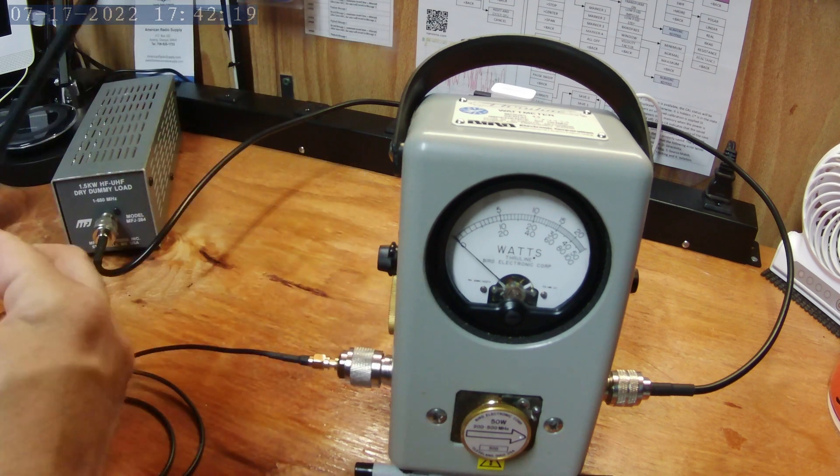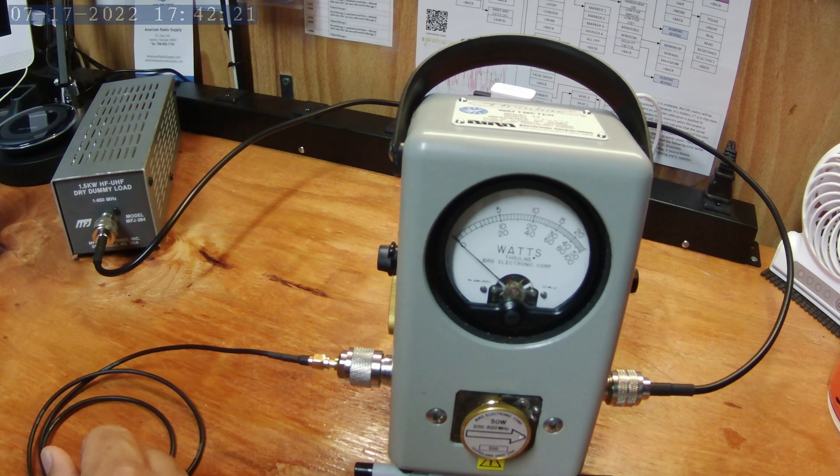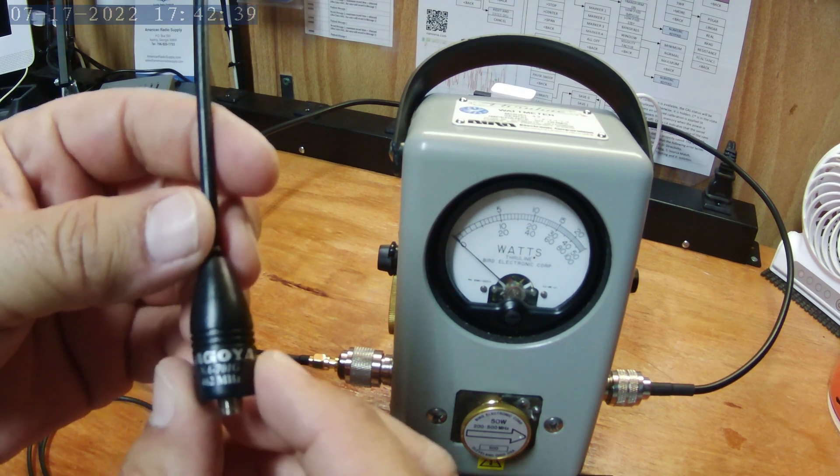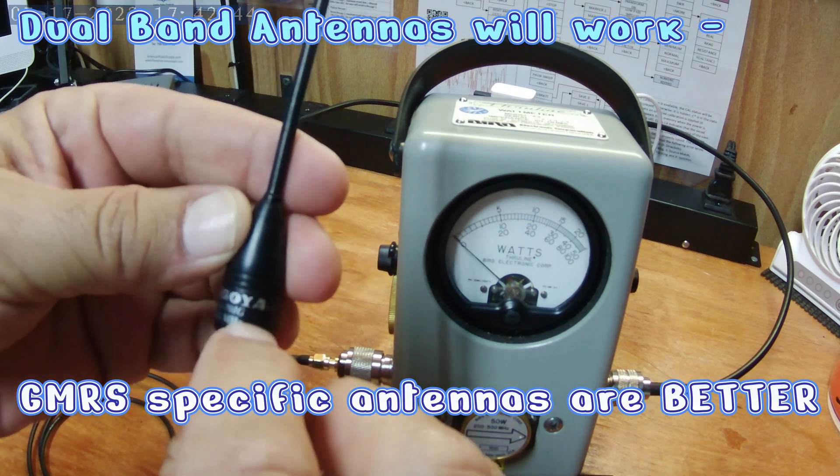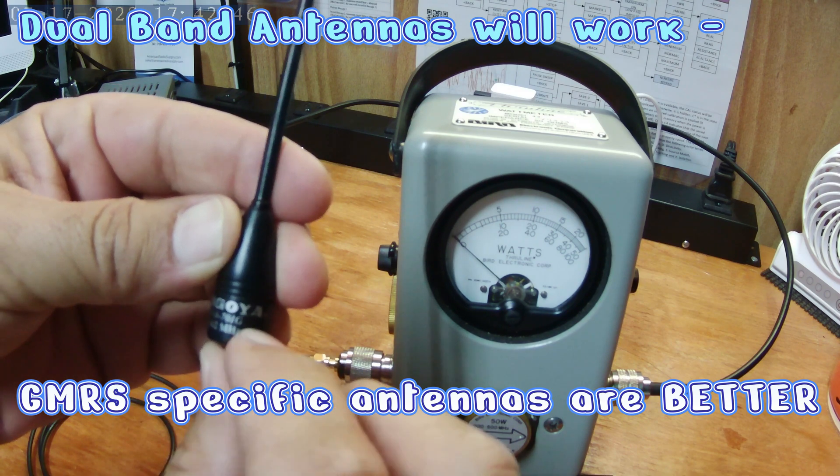And also keep in mind, antennas matter. Things I can tell you, if you're going to order an antenna for your GMRS radio, make sure it has a G at the end.